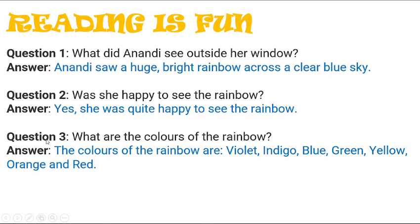Question number 3: What are the colors of the rainbow? Answer: The colors of the rainbow are Violet, Indigo, Blue, Green, Yellow, Orange, and Red. In Hindi, the rainbow colors are Bangni, Nila, Asmani, Harap, Peelah, Santri, and Lala.